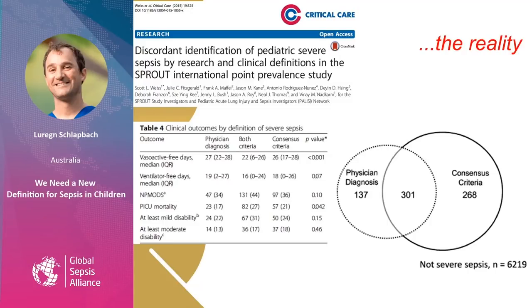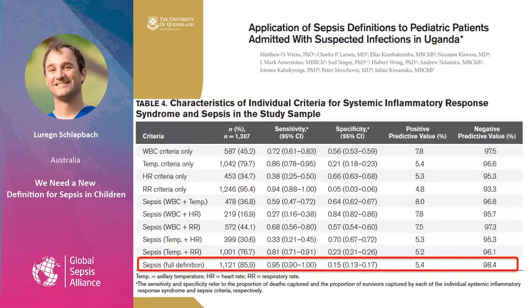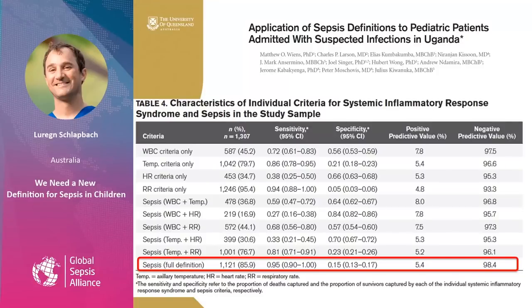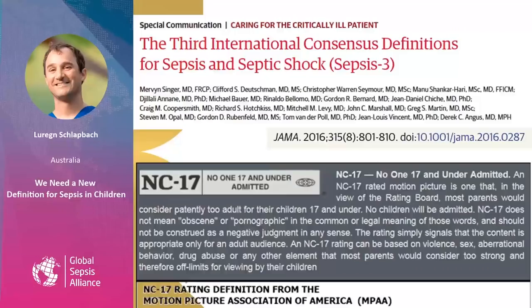The question is how well do the criteria actually perform? One study from the Matt Weiss Group in Uganda attempted to validate sepsis definitions in a cohort from a low-income setting. They showed that sepsis definitions have very high sensitivity to identify children with sepsis; however, the specificity was very poor, challenging the utility of these definitions in clinical practice.